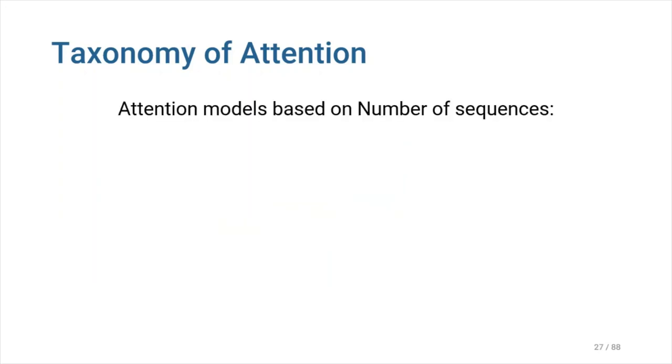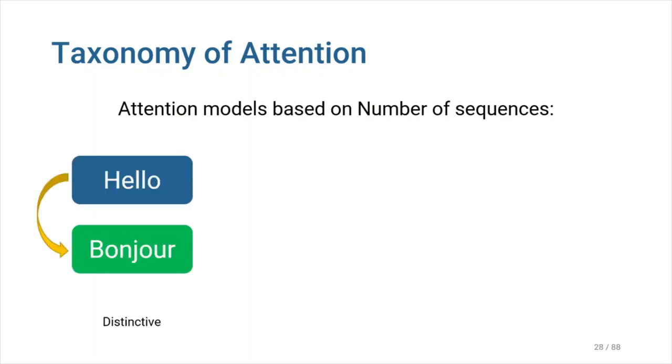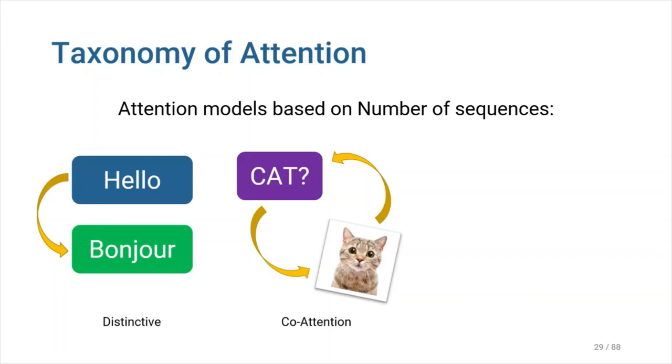So, how can we categorize attention models based on their number of sequences? So far, we've just looked at the case of a single input and its resulting output sequence. When candidate and query states belong to two distinct input and output sequences, this form of attention which we call distinctive is used.